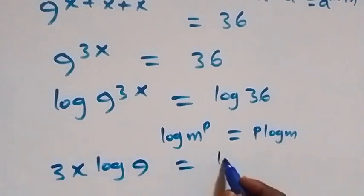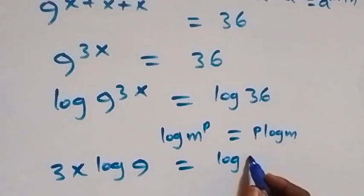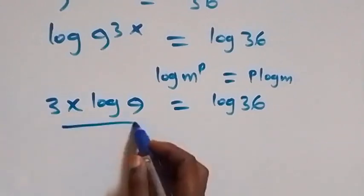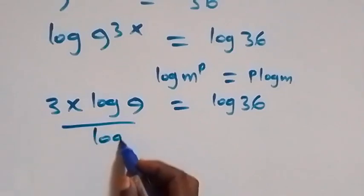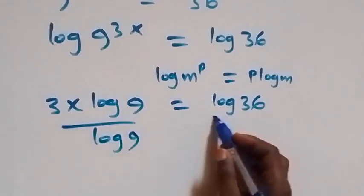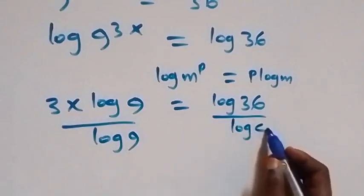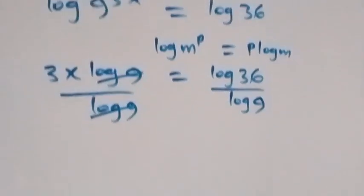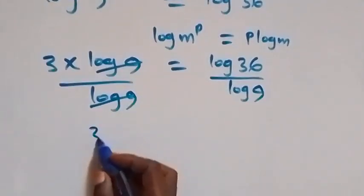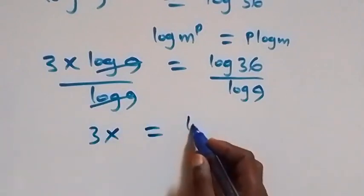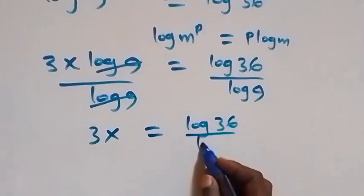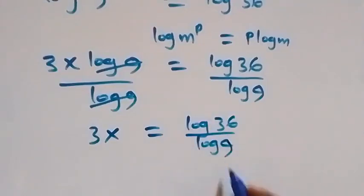At the next step, we divide both sides by log 9. Dividing here by log 9 and also dividing that side by log 9 — the log 9 terms cancel each other — and we are left with 3x equals log 36 over log 9.